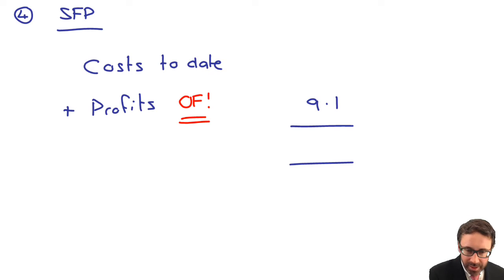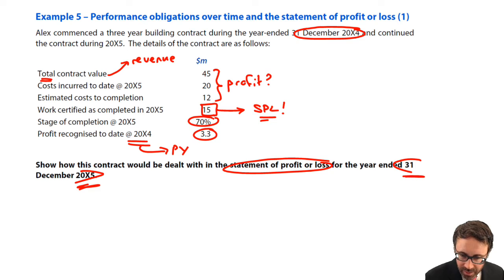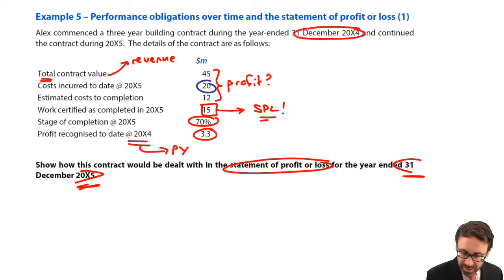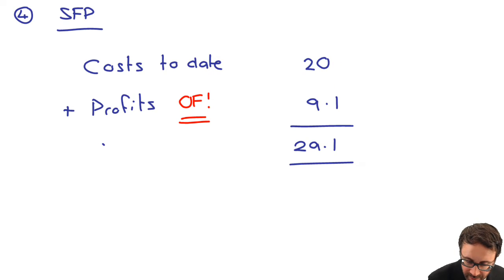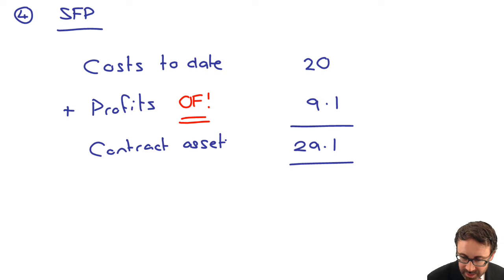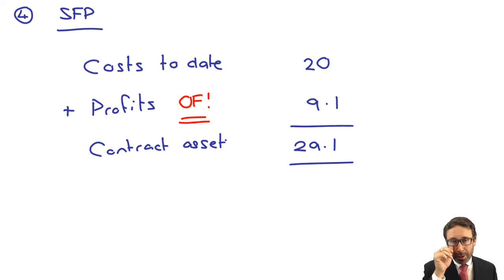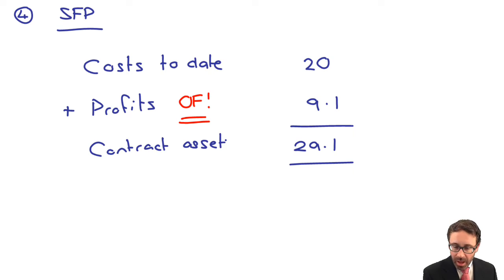The costs to date were given within the question at 20, and the profits to date are 9.1. So the contract asset sitting in current assets — similar to an inventory balance in that you're constructing an asset ready to sell on — comes to 29.1. Nice and straightforward.